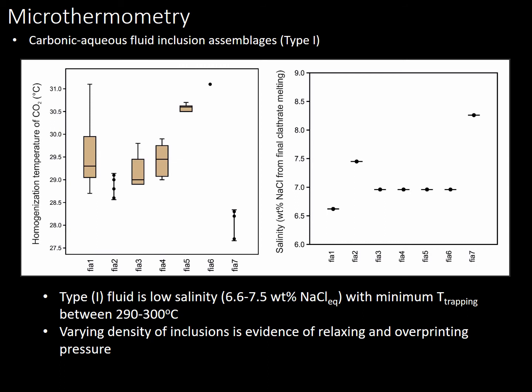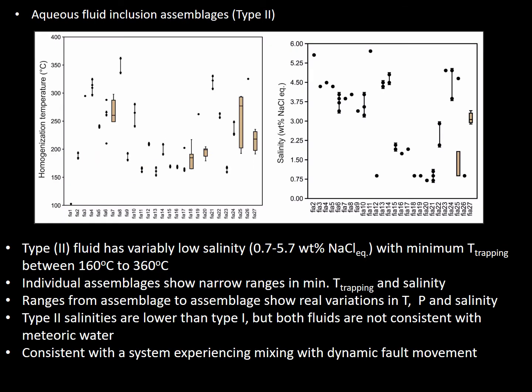Summarized microthermometry data shows that Type 1 fluid, associated with carbonic-aqueous fluid inclusion assemblages, has low salinity from 6.6 to 7.5 weight percent NaCl, with minimum trapping temperatures between 290 and 300 degrees Celsius. The variant density of inclusions is evidence of relaxing and overprinting pressure. Type 2 fluid has variably low salinity ranging from 0.7 to 5.78 percent NaCl, with minimum trapping temperatures between 160 and 360 degrees Celsius. Individual assemblages show narrow ranges, but assemblage-to-assemblage ranges show real variations in temperature, pressure, and salinity. Type 2 salinities are lower than Type 1, but both fluids are not consistent with meteoric water — they are, however, consistent with a system experiencing mixing with dynamic fold movement.